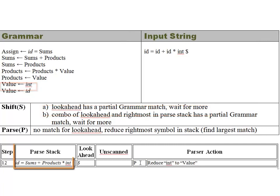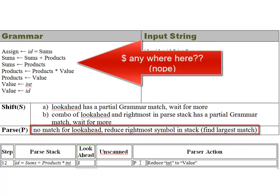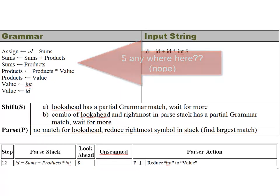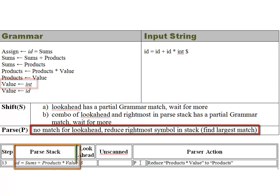The int is added to the parse stack and our look-ahead is now the dollar sign, the end-of-input marker. The dollar sign doesn't match anything in the grammar, so from here on out we'll be doing reductions. In step twelve, we reduce the rightmost portion — int — to value. Then value further reduces to products.